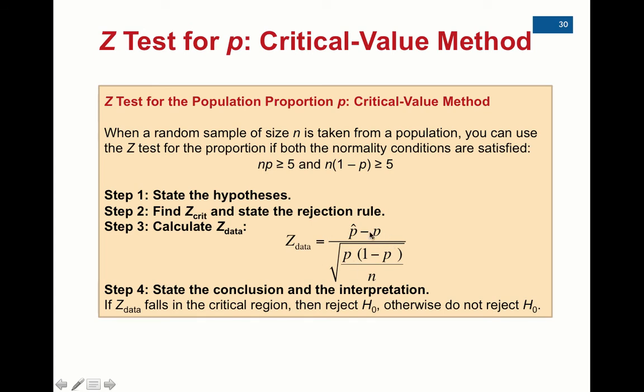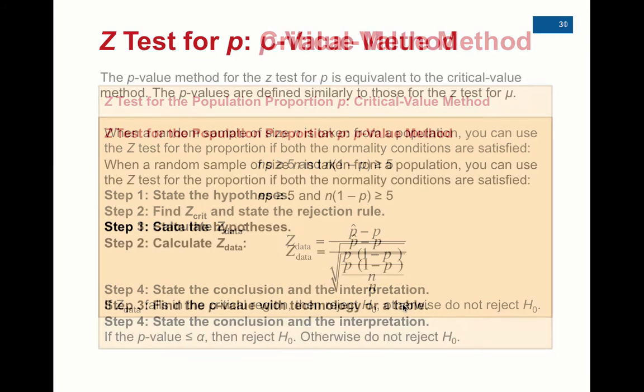It's a different formula than what we've dealt with before, but it's still a pretty basic formula that we've actually seen before. It's just not the same as the mean one that we were working with in the last two lectures. Lastly, step four: if z-data falls in the critical region, then we reject H0; otherwise, do not reject H0, and we've had practice with that.